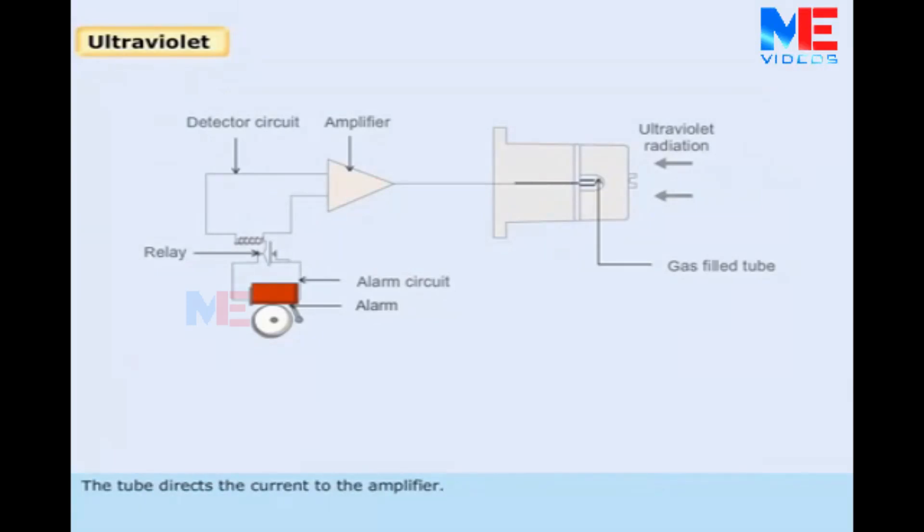The tube directs the current to the amplifier. When the flow of current increases beyond the preset value of the amplifier, the relay closes and triggers the alarm.